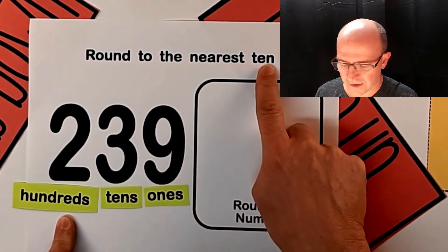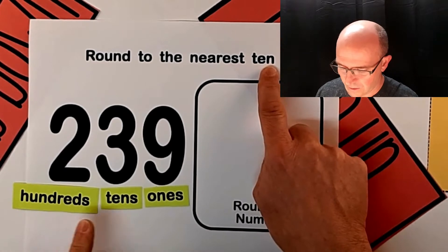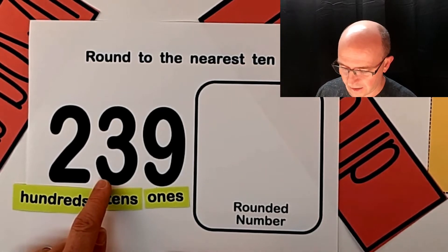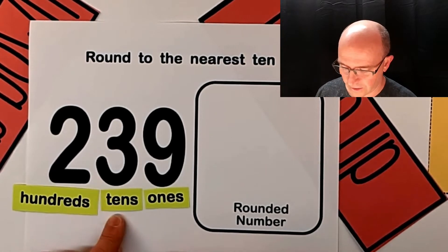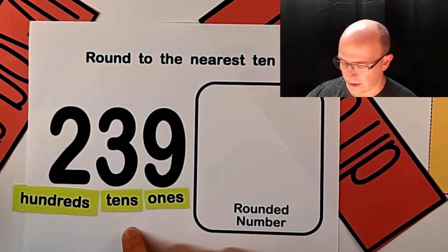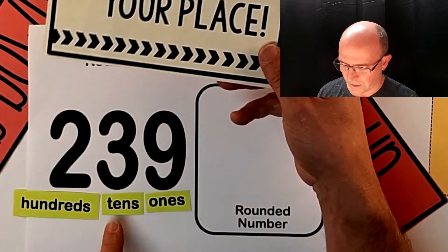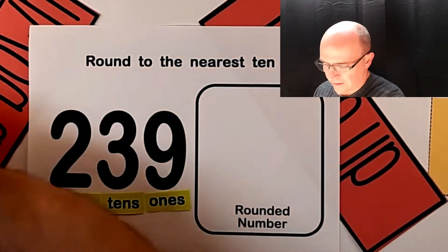Round to the nearest 10 — I'm still just looking at my tens place on here. That was step number one: I found my tens place.